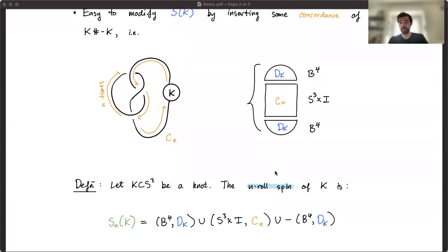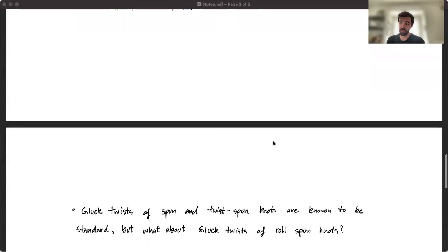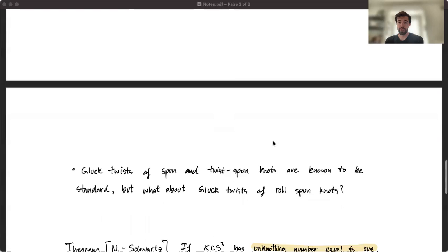Okay, so Gluck twists have been studied for a long time. In particular, it's known that Gluck twists of spun knots are standard, more generally twist-spun knots, and even in some cases roll-spun knots. For instance, if you start with a torus knot, the Gluck twist of the roll-spin is known to be standard. But it's still an open question whether or not Gluck twists of all roll-spun knots are standard.